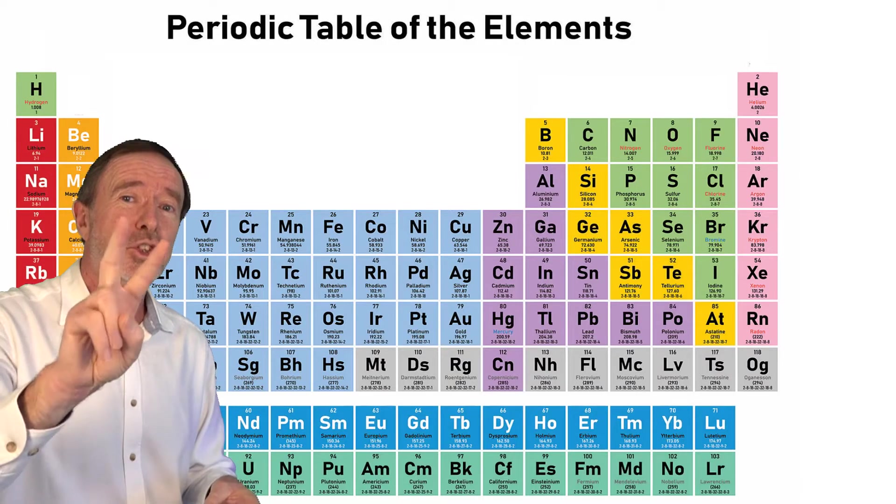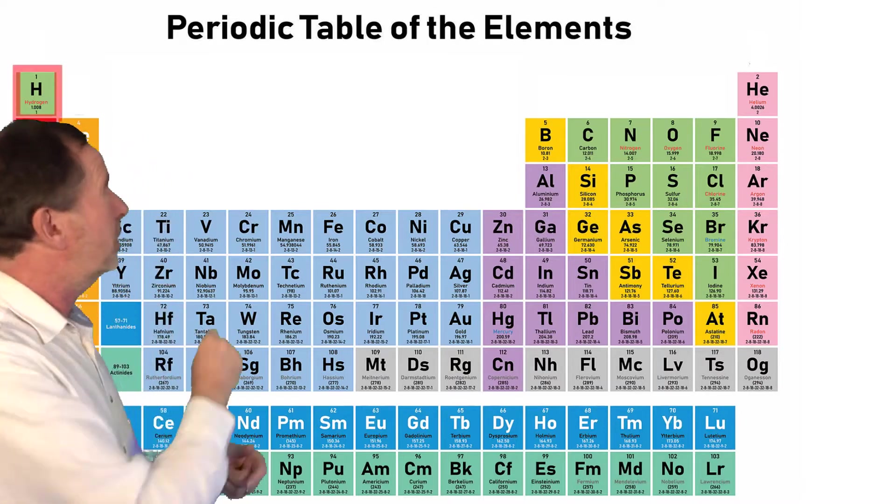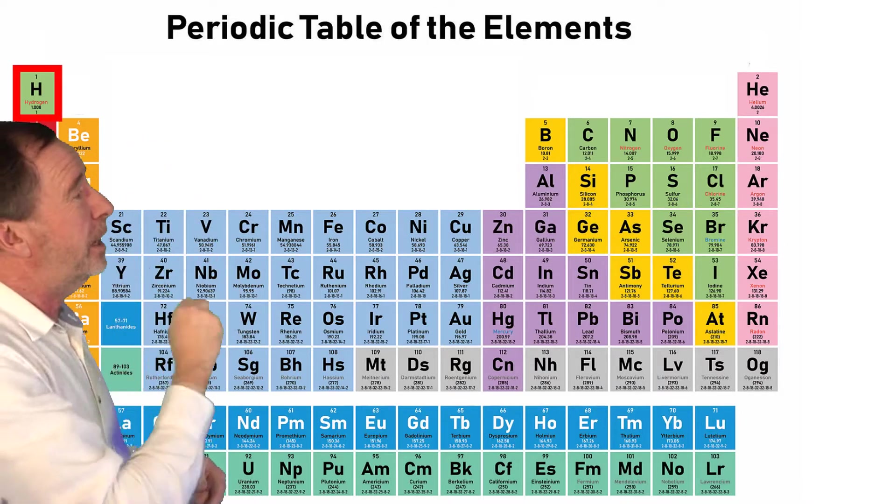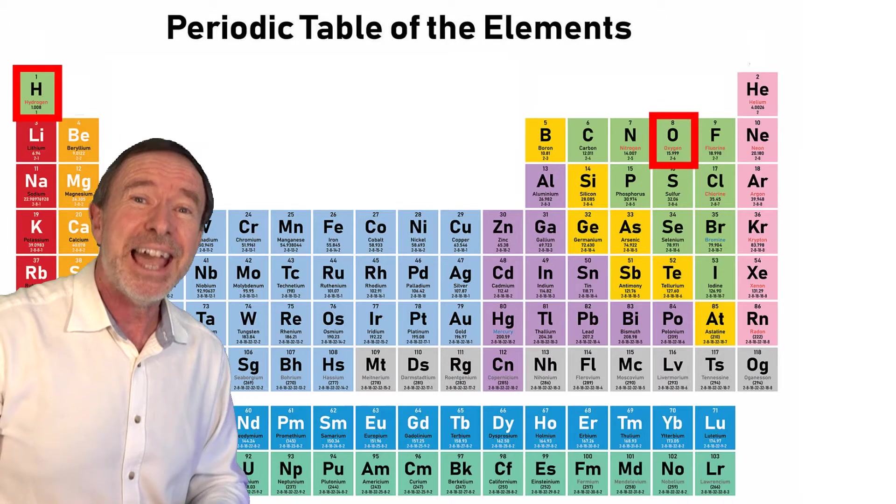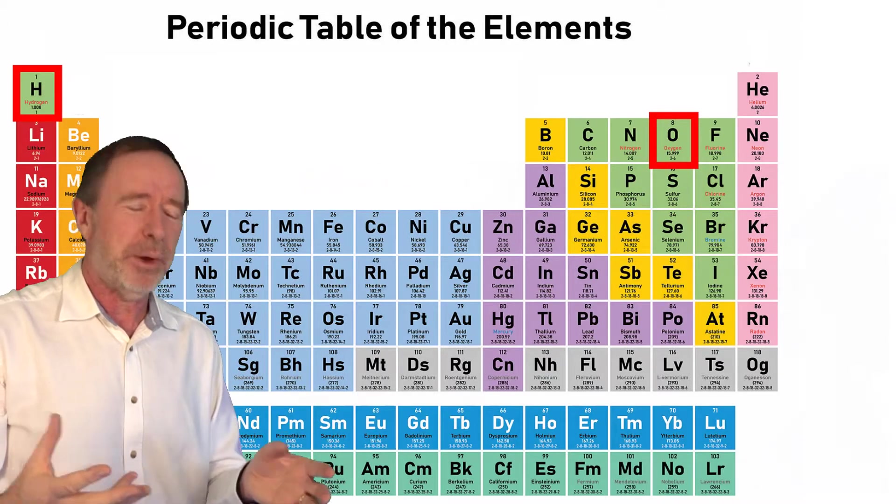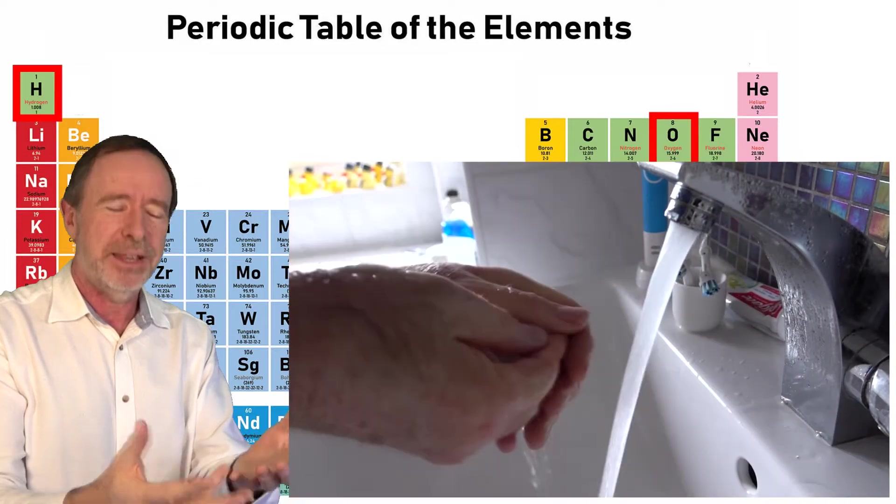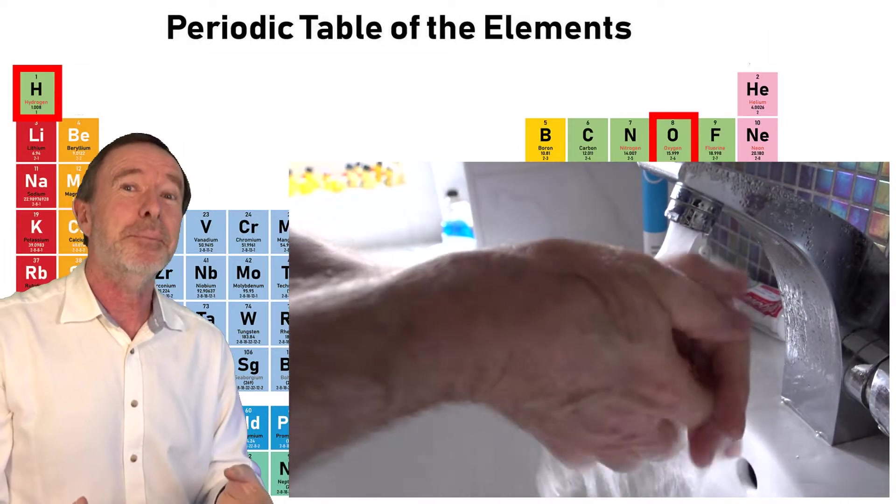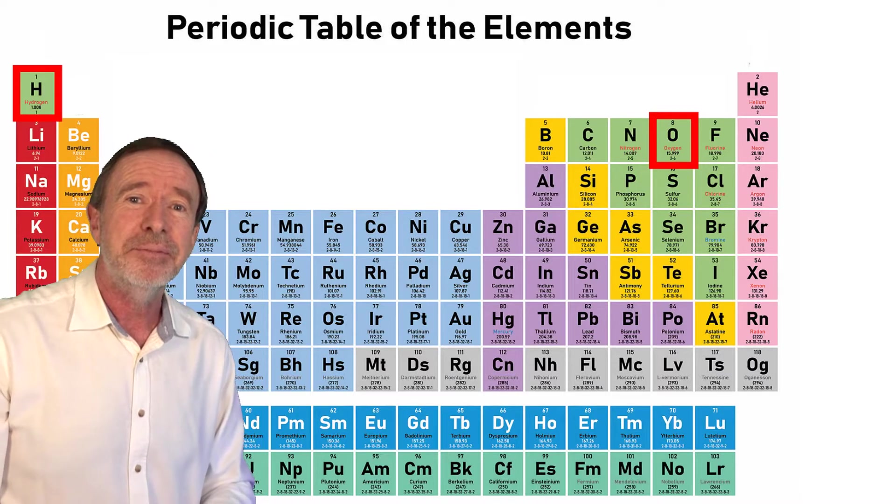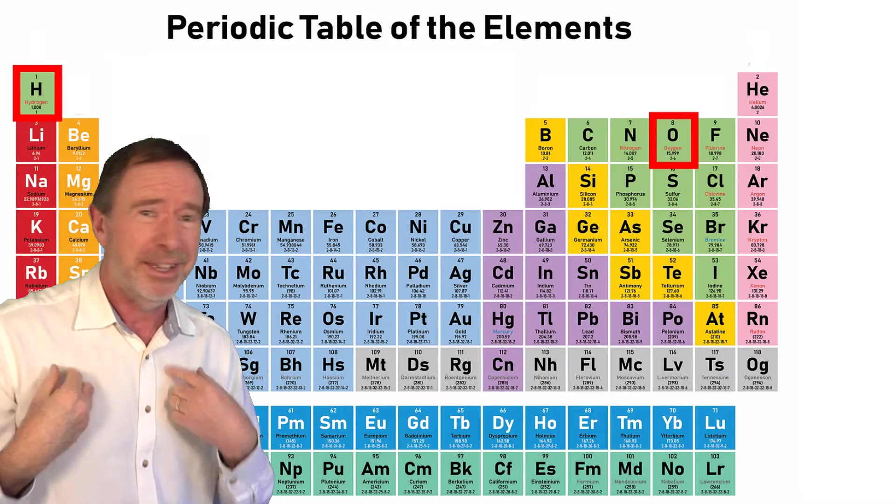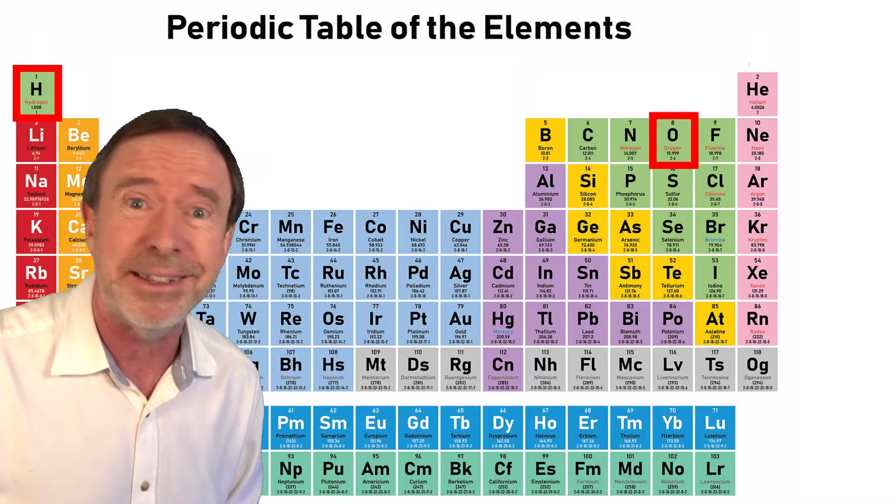It's actually made up of two elements. These two, hydrogen and oxygen. Both of these are gases. Just think of that when you're washing your hands under the tap. That water is actually made up of two gases that you can't even see. You say grandfather's crazy. Science is just crazy sometimes.